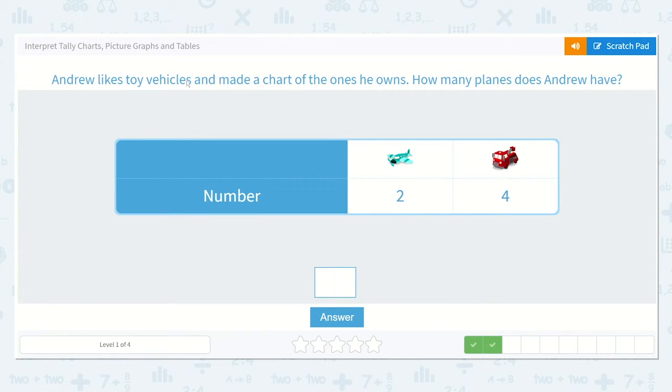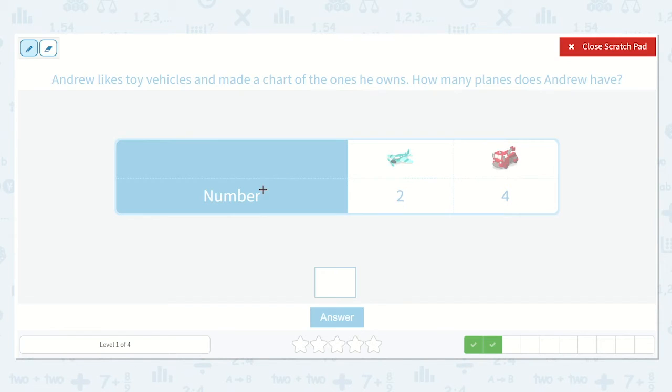Andrew likes toy vehicles and made a chart of the ones he owns. How many planes does Andrew have? I can see that here, they're showing us which toy. And then here it's saying, well, this is the number of toys they have. And they're going to put that number right under that toy. So there are two planes and there are four trucks.